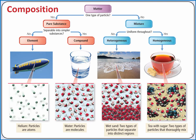We can also classify matter with respect to composition. Matter can be classified as either a pure substance or a mixture, and then we can further classify pure substances as either element or compound, and mixtures as either heterogeneous or homogeneous.